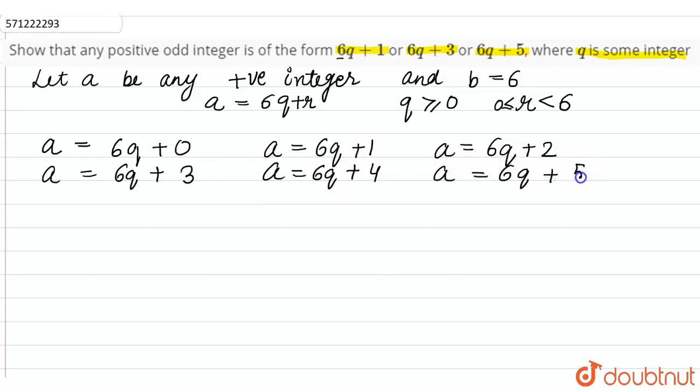We have put the values of r: 0, 1, 2, 3, 4, and 5. Now if you can observe from these six values of a, 6q, 6q+2, and 6q+4 are even because these numbers are divisible by 2.